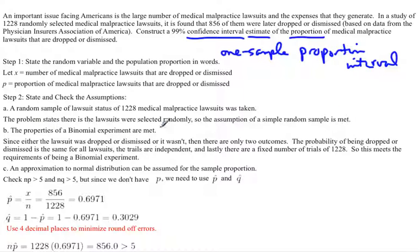And the next one's hard to write in terms of the problem. So I usually just write that the properties of a binomial experiment are met. But then I've got to show whether or not they are. So every lawsuit was dropped or dismissed or it wasn't, so there are only two outcomes. The probability of being dropped or dismissed is the same for all lawsuits. The trials are independent, so one lawsuit shouldn't affect the other. And lastly, there is a fixed number of trials. In this case, it's 1,228. So this means that we have, in fact, met the properties of the binomial experiment.